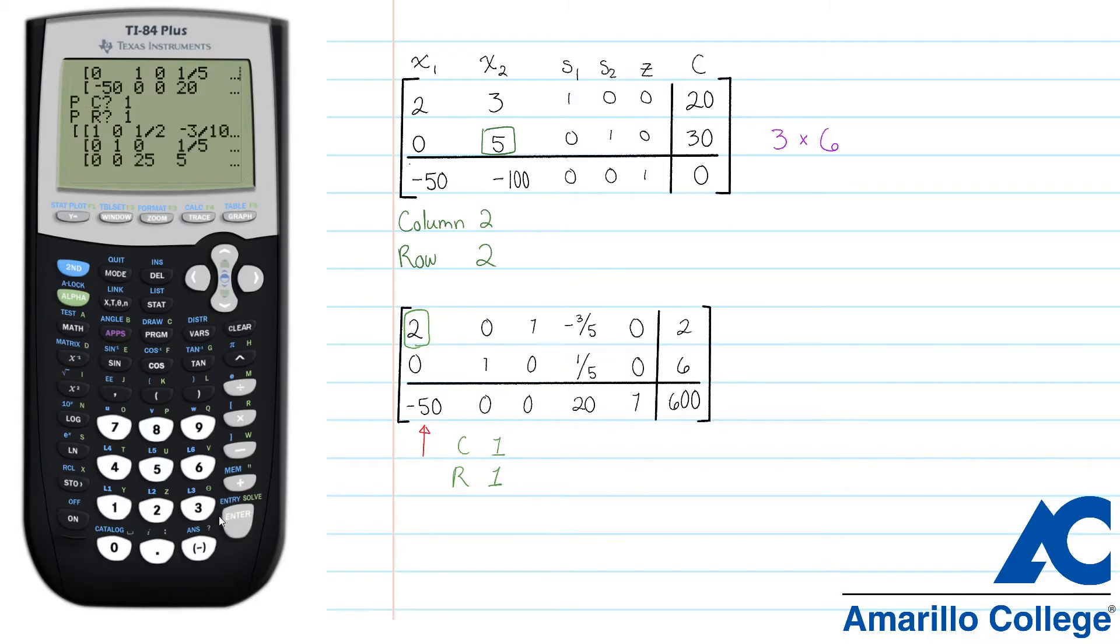The calculator again does all the hard work for us, and we have the job of copying down the entire matrix. So now that we've copied our matrix down, we can very clearly see that the indicator row does not have any negative numbers. When you cannot find any negative numbers in our indicator row, the matrix is optimized and we are done with the pivot program.